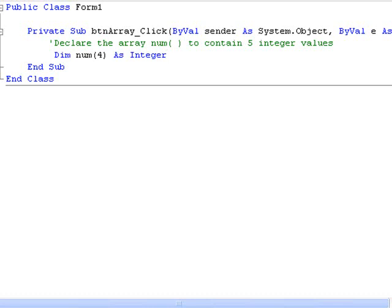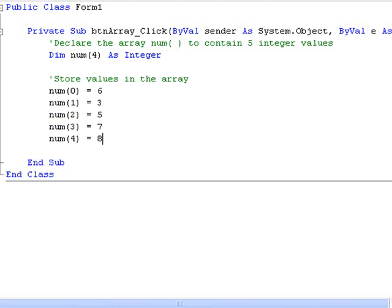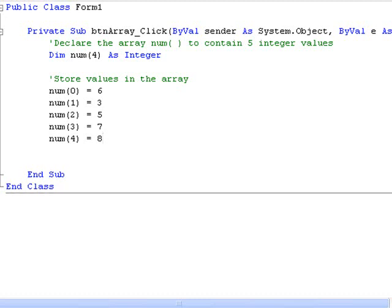Now we will store values in the individual elements as follows. We are storing the value 6 in num(0) and the value 3 in num(1) and so on. Alternatively, we could have declared and assigned the values to our array in a single statement like this. I have put a comment symbol at the beginning of this line as Visual Basic will not allow us to declare the same array a second time, so we can only use one of the methods.